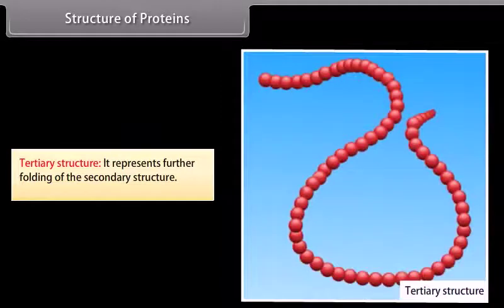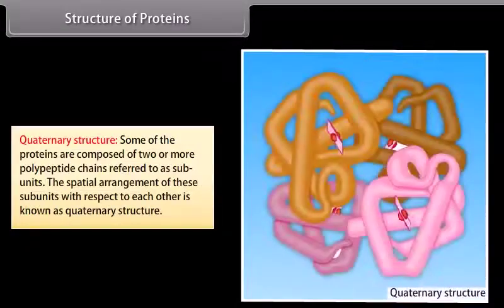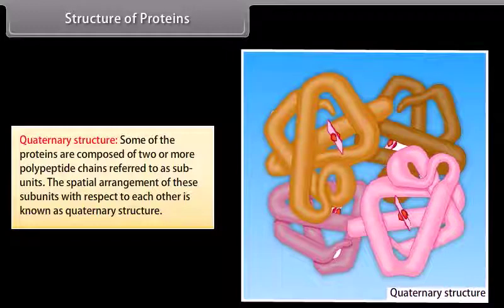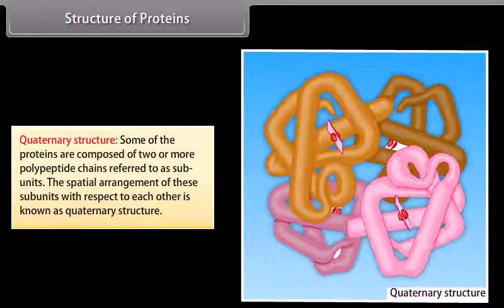Tertiary structure represents further folding of the secondary structure. Quaternary structure: some proteins are composed of two or more polypeptide chains referred to as subunits; the spatial arrangement of these subunits with respect to each other is known as quaternary structure.